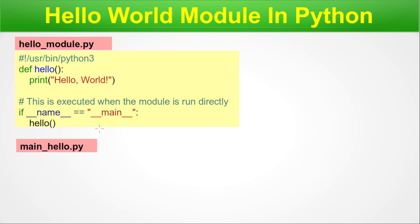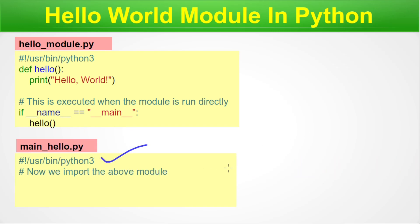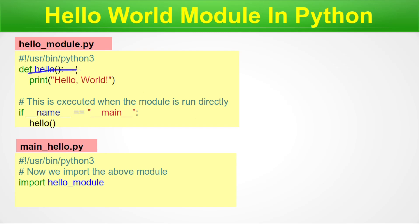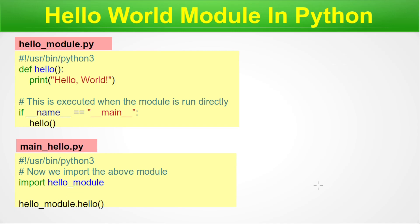Next we have main_hello.py — a separate Python file from hello_module.py. Here we import the module using the keyword 'import' followed by the module name, with no .py extension. Both files are kept in the same directory for this practice. To access the hello function, we use 'hello_module.hello' — using a dot separator to call the function defined in hello_module. This is how you use any function defined inside a Python module.